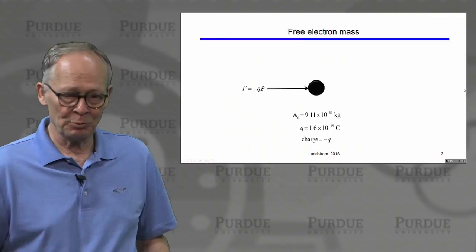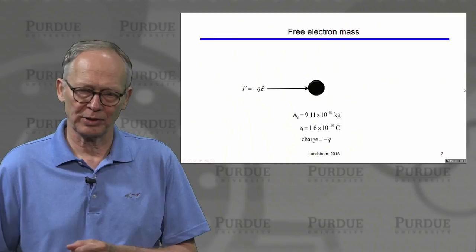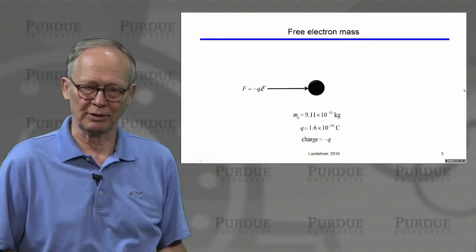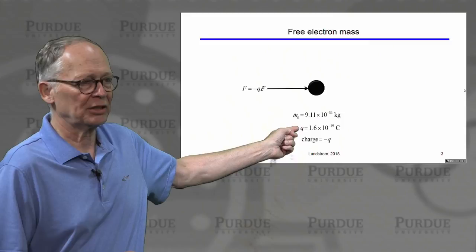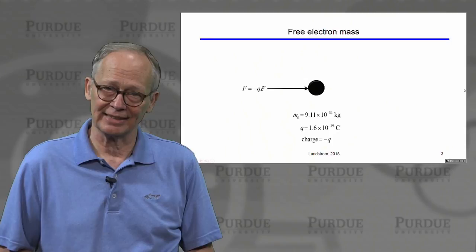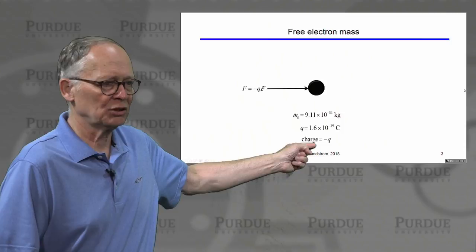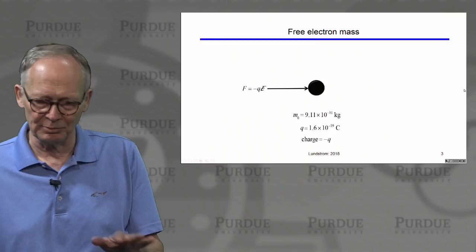Electric fields exert forces on charged particles. The force on this electron is minus q times the electric field. In semiconductor work, we denote q as the magnitude of the charge on an electron — 1.6 times 10 to the minus 19th Coulombs. The actual charge is negative, so we write it as minus q. This is the convention typically used by semiconductor people.